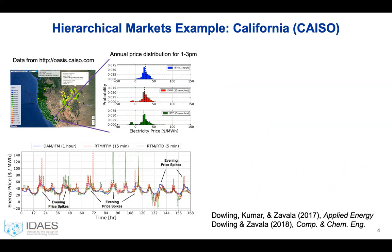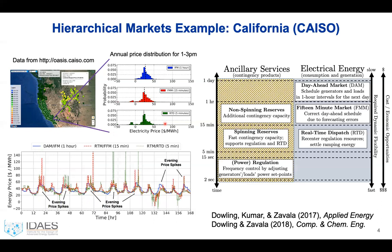When a resource decides to participate in the market, there are a lot of options. One could transact energy — either as a consumer or a generator — in the day-ahead and real-time markets. There are also reserves and regulation ancillary services. In general, the faster the timescale, the more economic opportunity. For the rest of this talk, we'll focus on the energy markets.